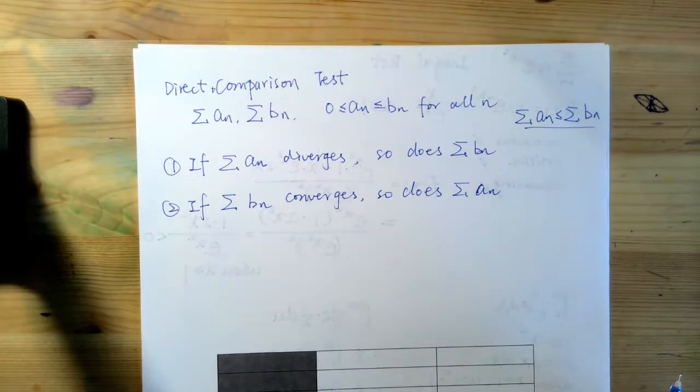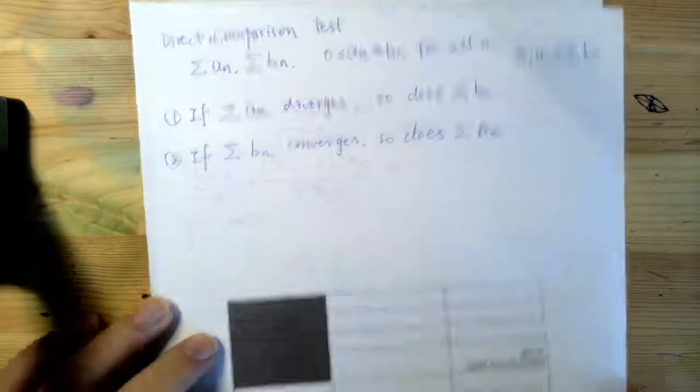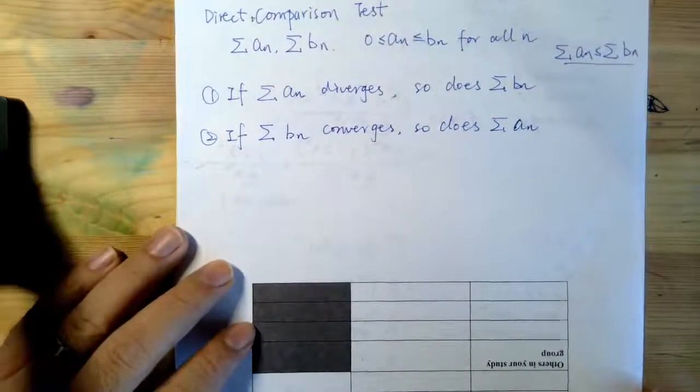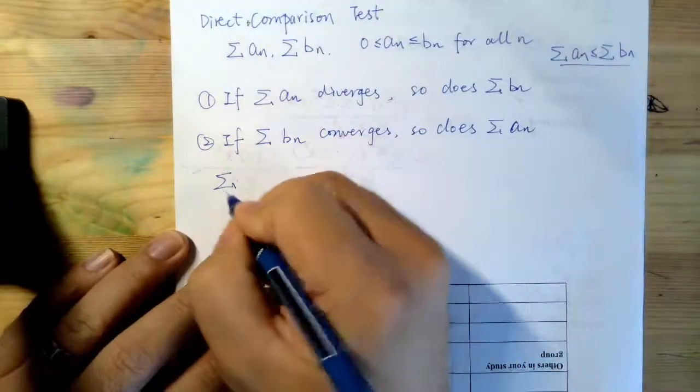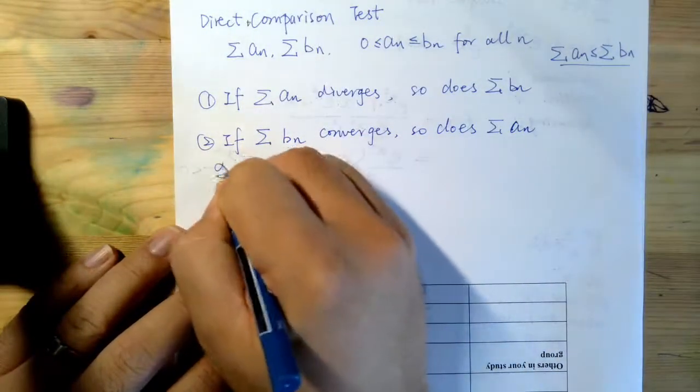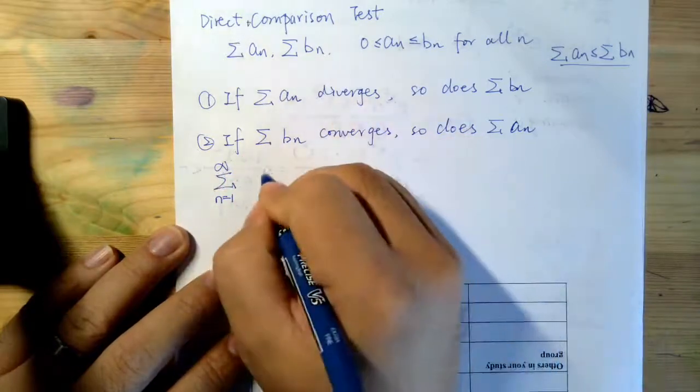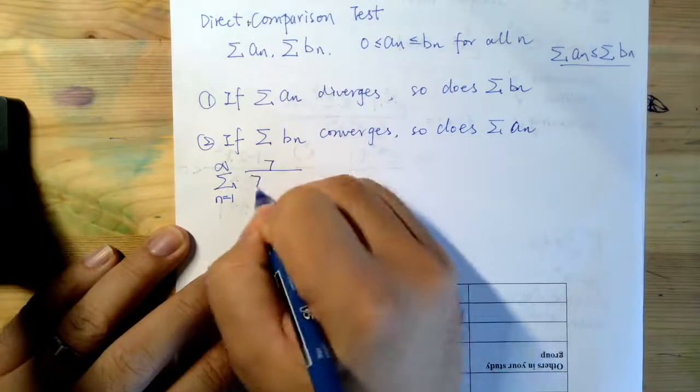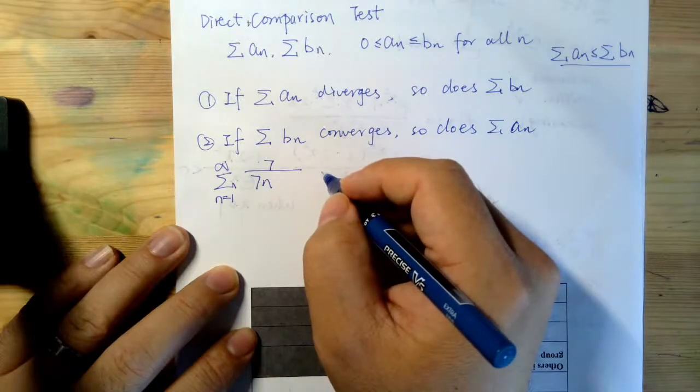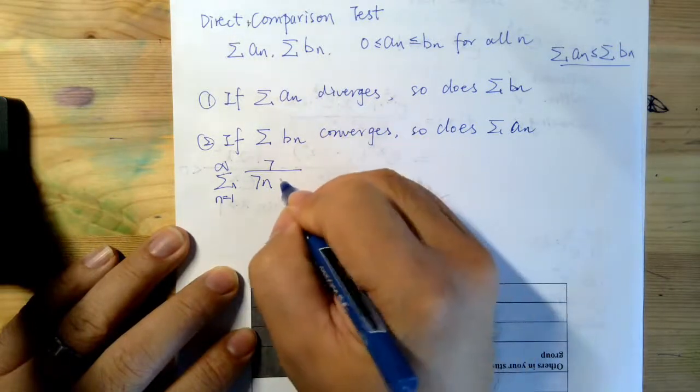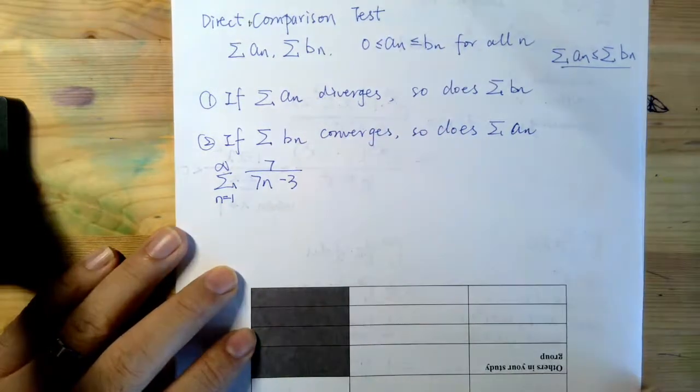So, we can look at a very simple example in the very beginning. For example, if we take a look at like this example. If we have a series, let's say 7 over 7n minus 3, something like this.